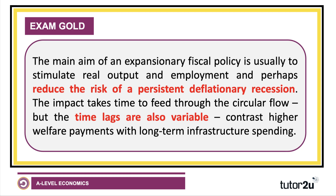The main aim of an expansionary fiscal policy is usually to stimulate real output and GDP, to drive employment creation, and — quite importantly — to reduce the risk or threat of a persistent deflationary recession. The impact of a stimulus takes time to feed through the circular flow of income and spending, and the time lags will be variable. Contrast, for example, Japanese cash handouts with those long-term infrastructure projects.